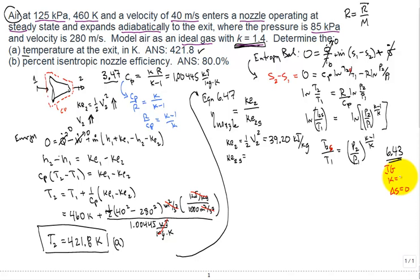What we do is we calculate the T2s given our ratio of pressures and our inlet temperature. It's 460 kelvin for our inlet temperature. Our pressure on the exit was 85, the pressure on the inlet 125, and we have the 1.4 minus 1, so 0.4 divided by 1.4, all that up there in exponent.